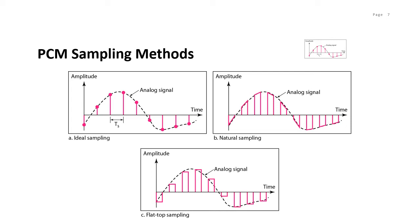The third type of sampling method is the most common one, called sample and hold, or flat-top sampling. As you can see, we sample and we hold, and this creates the flat top. The sampling process is also sometimes referred to as pulse amplitude modulation (PAM). You have to remember that the result is still an analog signal, but the value is a non-integral value.